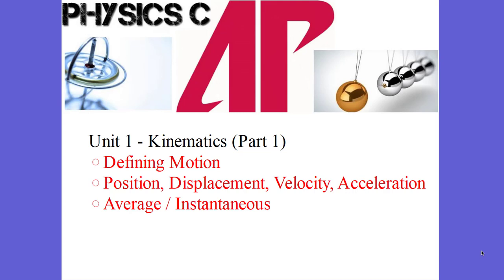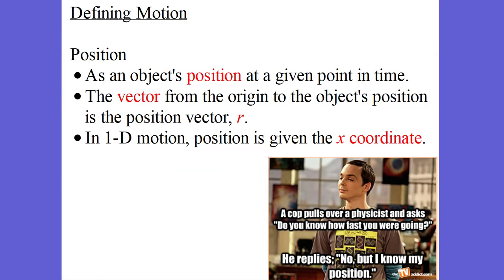Hey, this is Mr. Aiden. This is AP Physics C, Unit 1 Kinematics Part 1. Today we're going to be defining motion. We're going to be taking a look at position, displacement, velocity, acceleration, average versus instantaneous — all those things in this first part of kinematics. So let's get going.